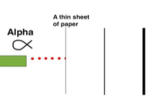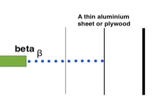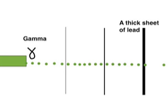And then some of it will pass through a thick sheet of lead. So in summary, alpha radiation is absorbed by a thin sheet of paper, beta radiation is absorbed by a thin sheet of aluminum or a piece of plywood.